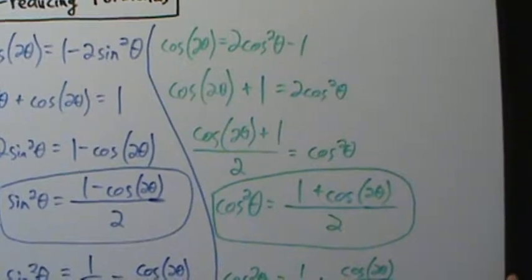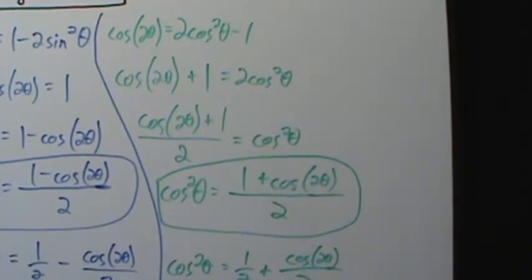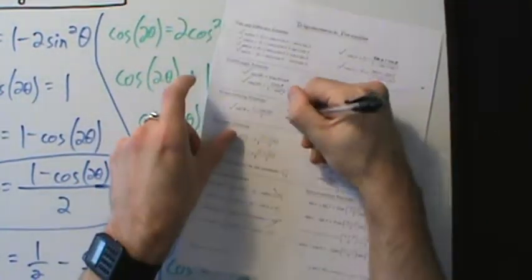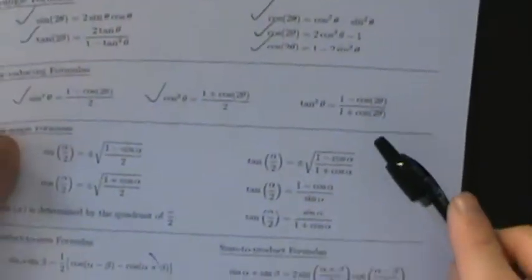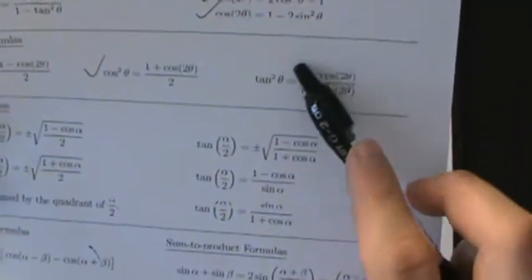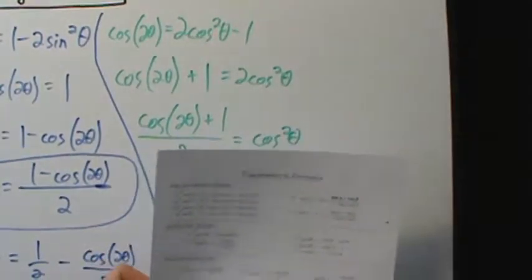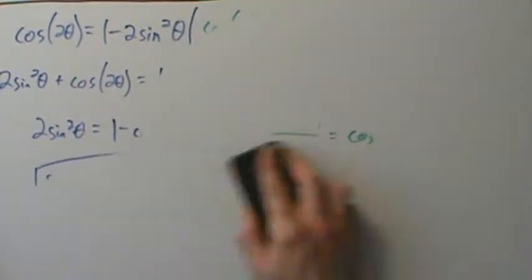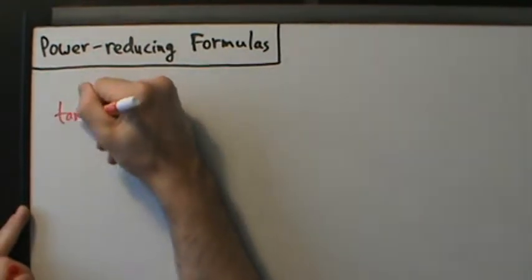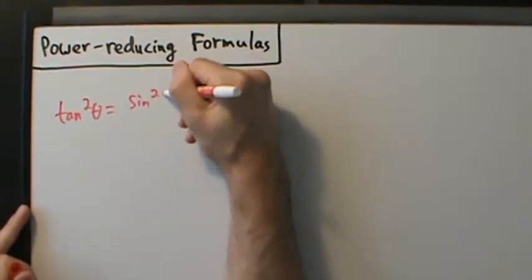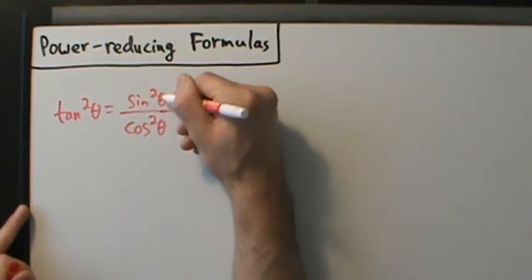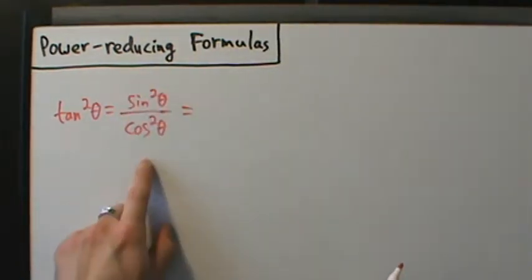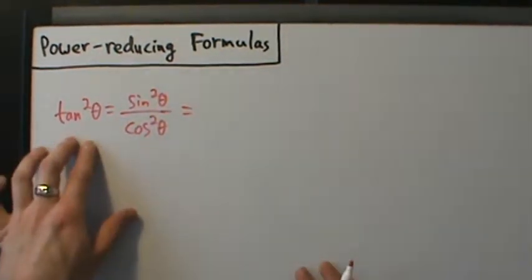The last one is tangent squared of theta. This one's actually going to be different. We know cosine squared of theta is one plus cosine of two theta, all divided by two. Now for tangent squared — it looks similar, with that same one and cosine of two theta pattern — but what we're actually going to do is use the fact that tangent is sine divided by cosine. So tangent squared of theta is sine squared of theta divided by cosine squared of theta.